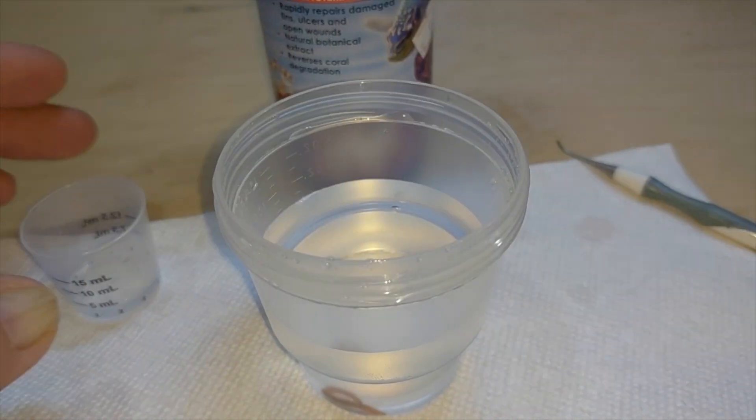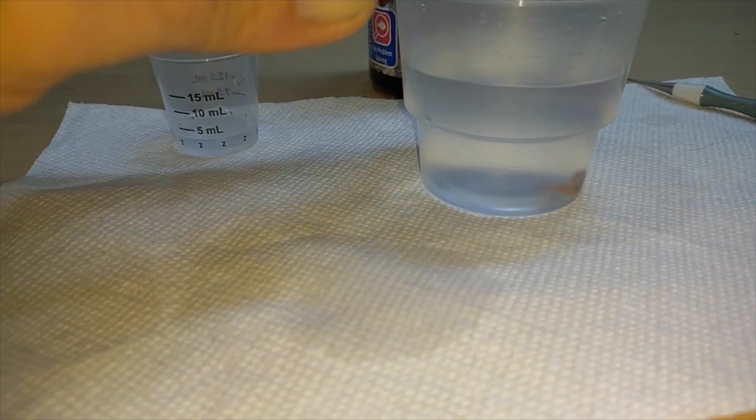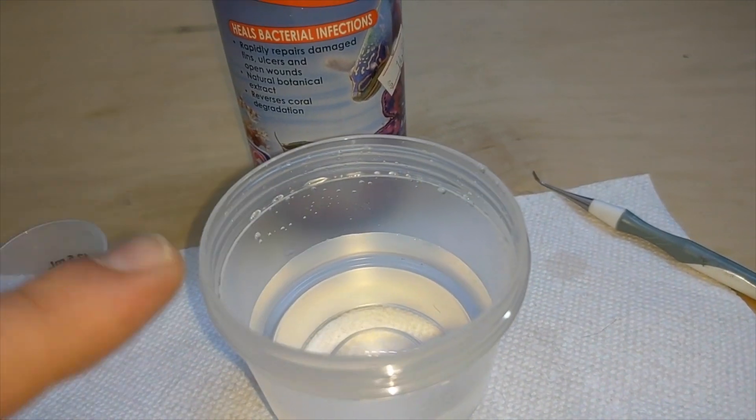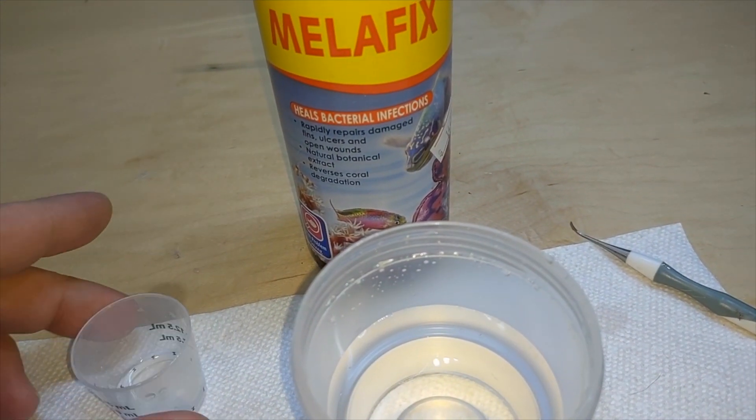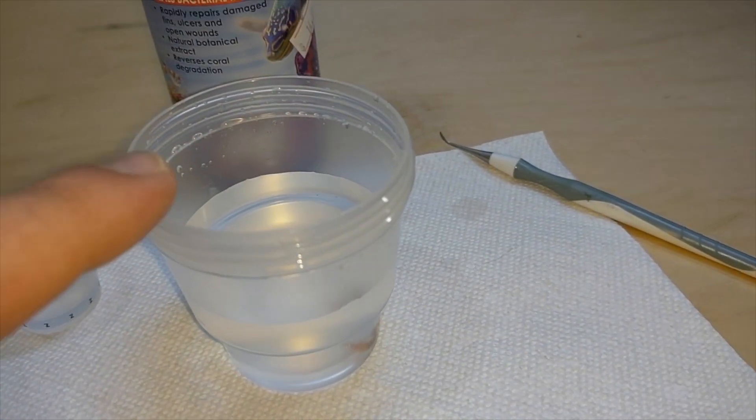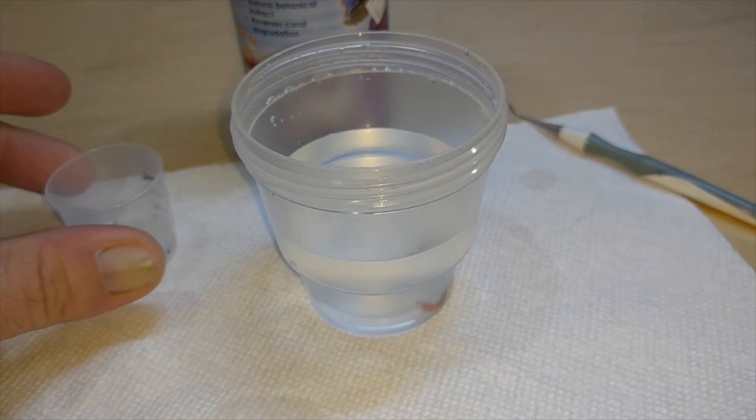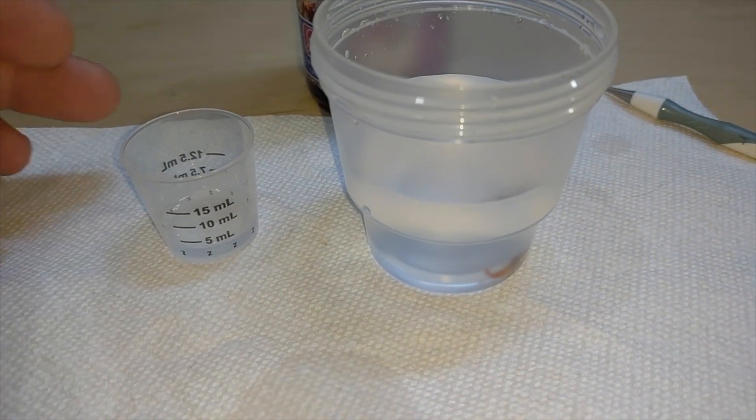So this is, let's see here, three ounces of water. My normal dosage for using MelaFix is 2.5 ml of MelaFix per one cup, but this is about how much water I actually use when I dip one new frag, and I put in about two and a half mils of the MelaFix.